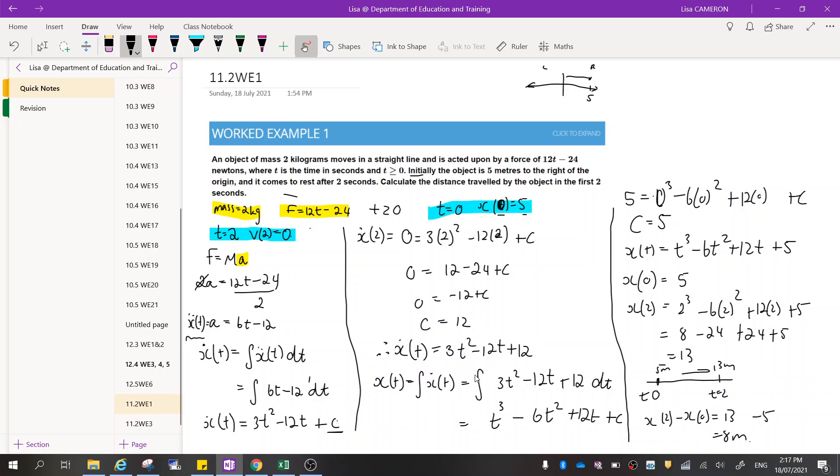So next thing we want to do is we want to integrate this again to get a function for displacement. So as you can see here, displacement doesn't have any dots above it. So I've integrated it. I'm left with a constant on the end. Now I'm going to use my next piece of information because now I know that my displacement function, when t equals 0, it should equal 5. So I'm going to plug that information in, and I'm left with c equals 5, meaning that this one here is a function for my displacement at any point.